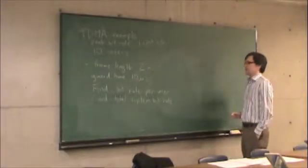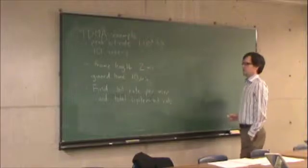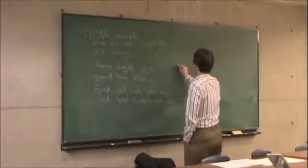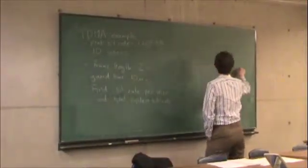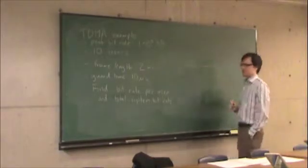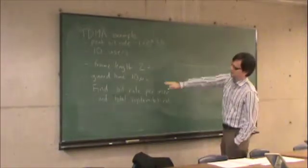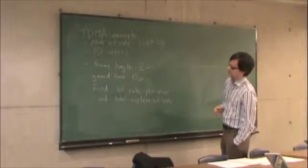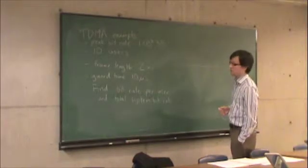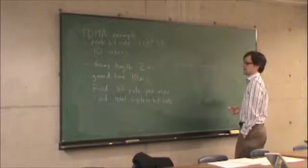Given this kind of sharing arrangement, we have 10 users and a 2-millisecond frame, so in these 2 milliseconds all 10 users have to have an equal shot. Separating each pair of users is a guard time of 10 microseconds.